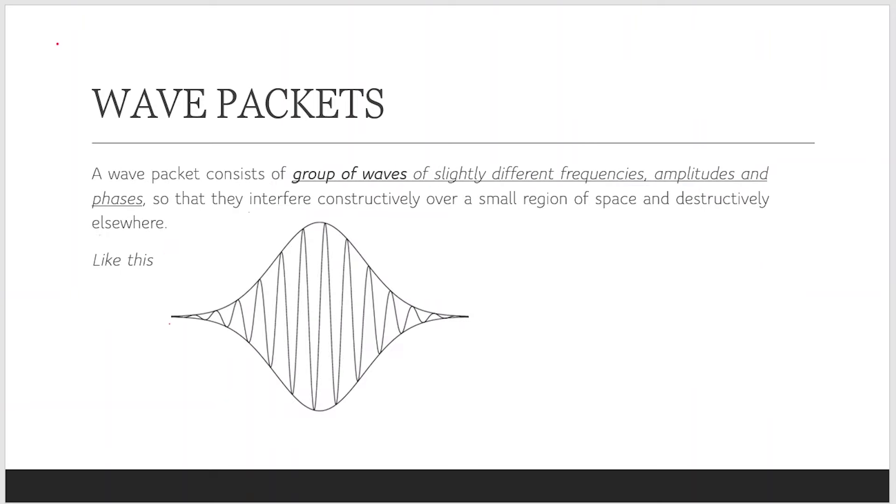So basically what is the wave packet? Wave packet is a group of waves of slightly different frequencies, amplitudes, and phases where they interfere constructively over a small space and destructively elsewhere. It is constructive here, elsewhere it is destructive.